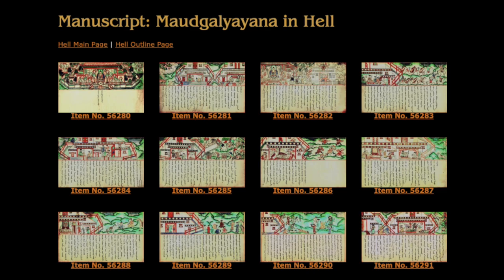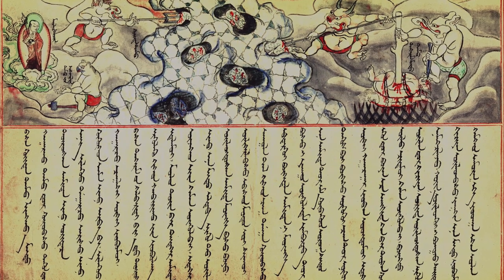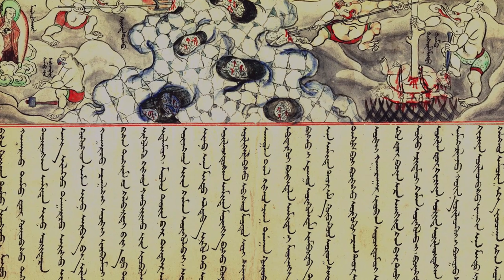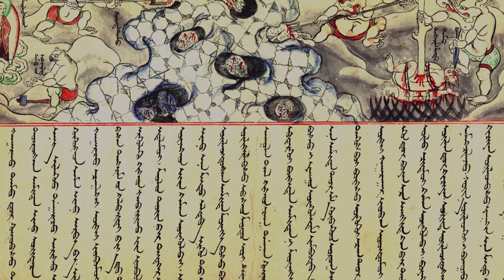For other forms of hell scenes beyond the wheel of life, we really have to look at narrative depictions. Sometimes we can see these in life stories of the Buddha, of his previous lives and the previous lives of his students. We can also see it in a text called Modgalyayana's Descent into Hell, which describes this student of Shakyamuni Buddha going into the hell realm to visit his mother or some relative. This is not common in the Tibetan tradition, but very popular in the Mongolian traditions, where you find many manuscripts with the actual text accompanied by images.